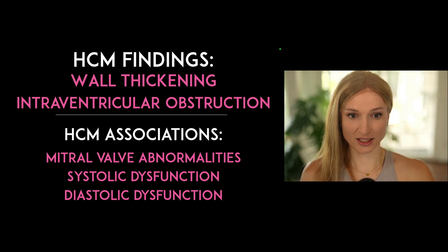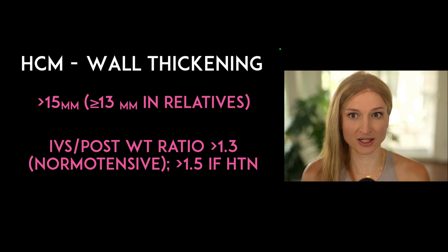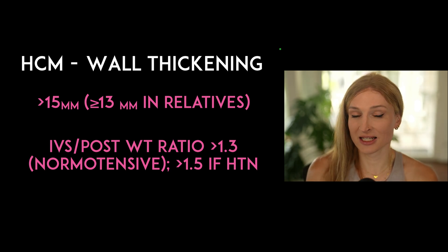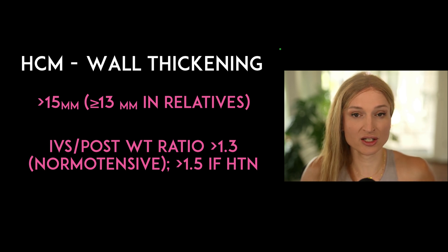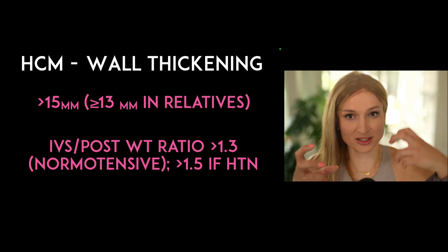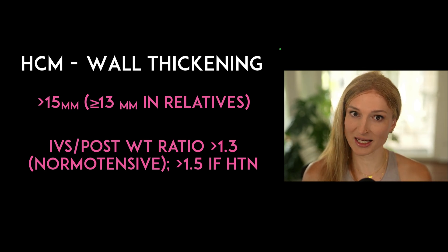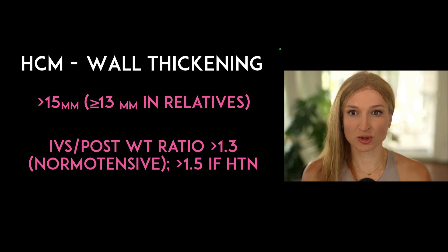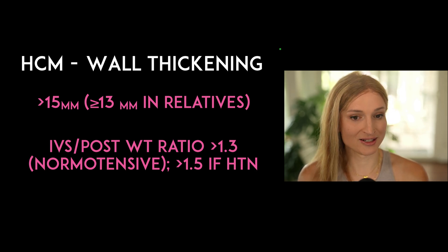When measuring thickness, we're going to look for wall thickening greater than 15 millimeters, or greater than or equal to 13 millimeters in patients who have relatives already diagnosed with HCM. We're also looking for focal thickening rather than overall thickening, which could indicate diastolic dysfunction or HFpEF. One way to assess this is the intraventricular septum to posterior wall thickness ratio — if that's greater than 1.3 in normotensive patients, that's diagnostic. If it's greater than 1.5 in patients with a history of hypertension, that's also diagnostic.